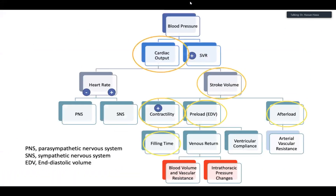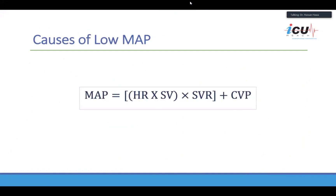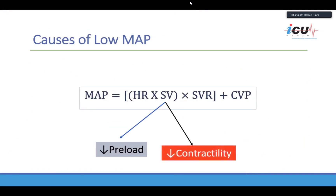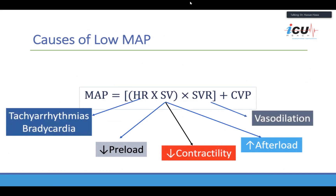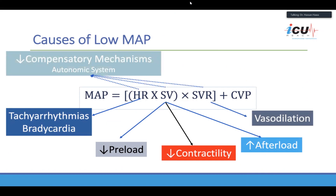Starting with the hemodynamic components — we've seen this slide yesterday — it's really important to know that when we do hemodynamic assessment, we would like to dissect the hemodynamics into its basic parameters: preload, contractility, afterload, and systemic vascular resistance, because each one of these will need a different approach in management.